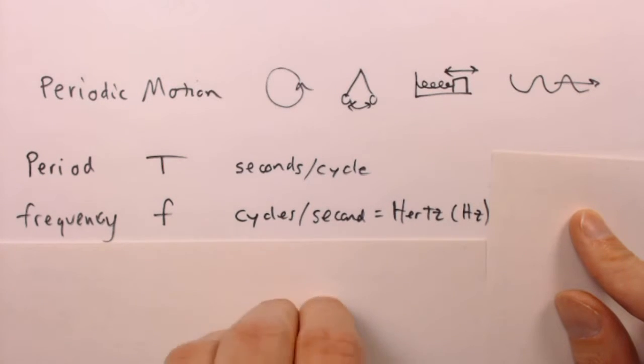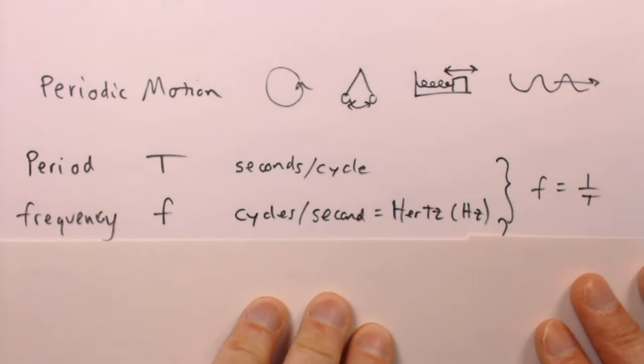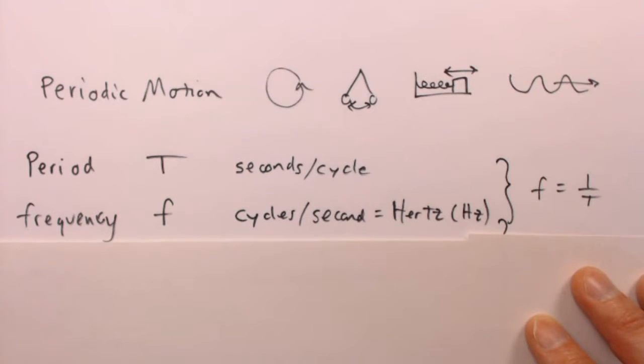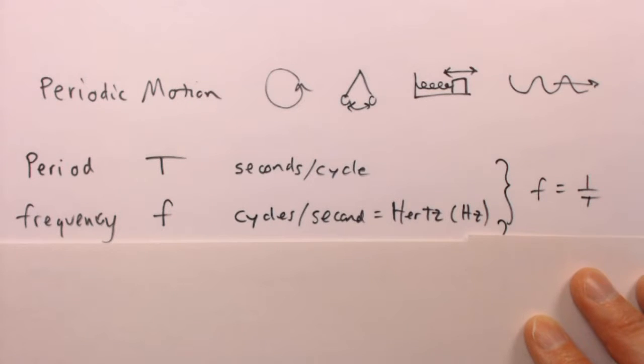And of course, you can see that period and frequency are reciprocals, since seconds per cycle is the reciprocal of cycles per second. And so there you have our first formula: f equals one over T. Not surprisingly, T is also equal to one over f.